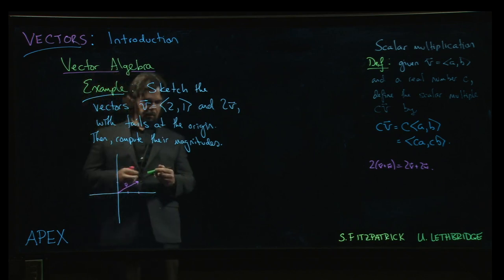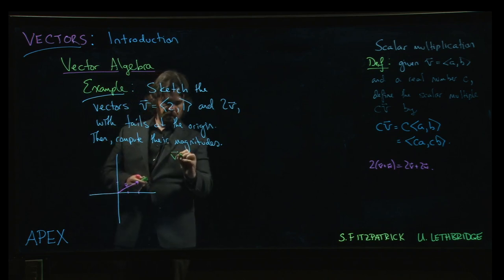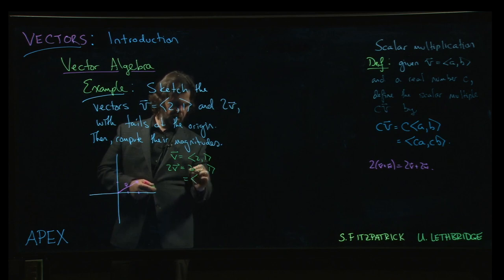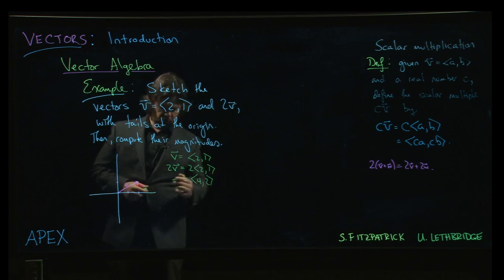Now 2 times v, so if v is (2,1), then 2v is 2 times (2,1), and so the rule is we multiply in the 2. So 2 times 2 is 4, 2 times 1 is 2,